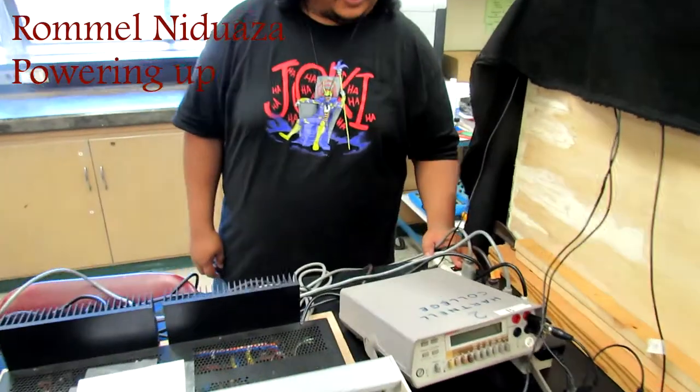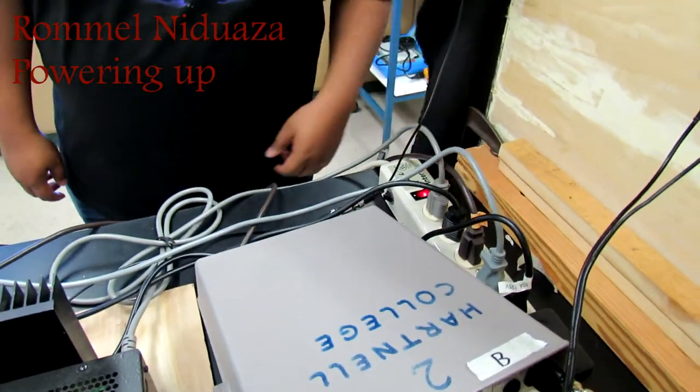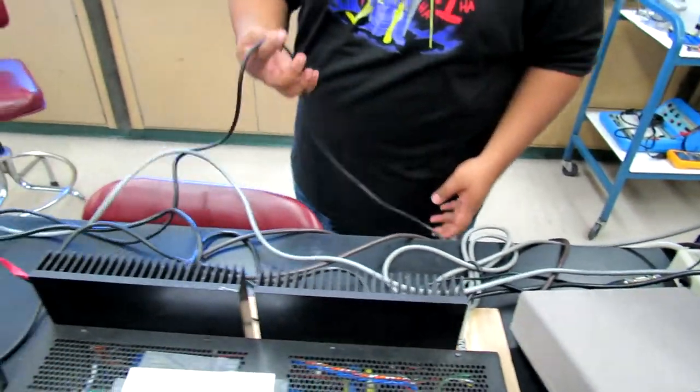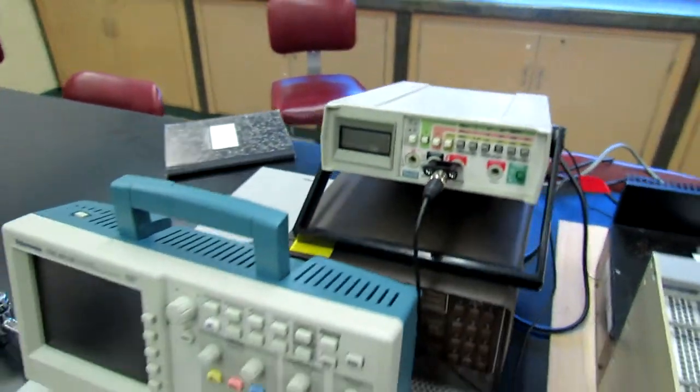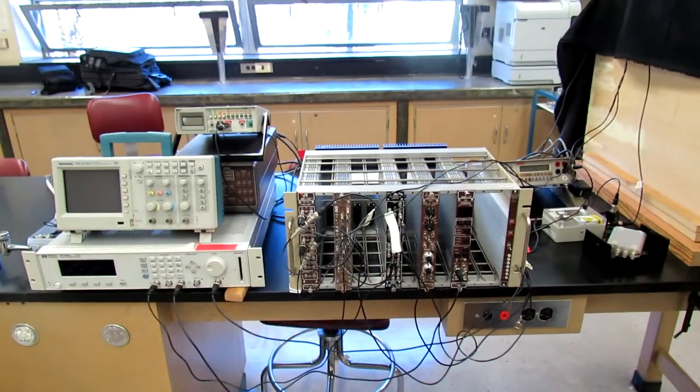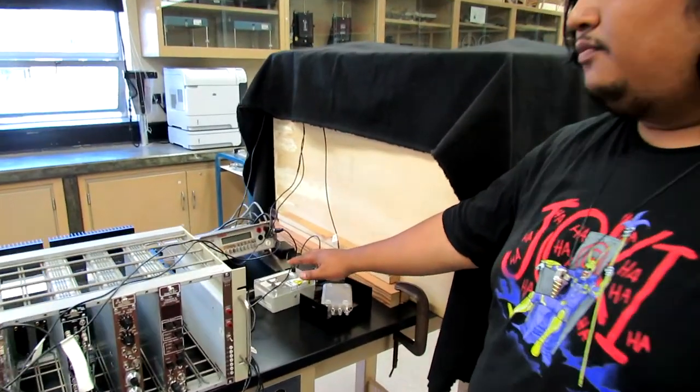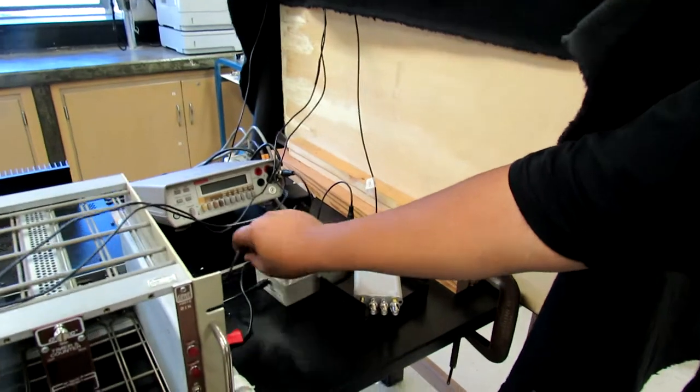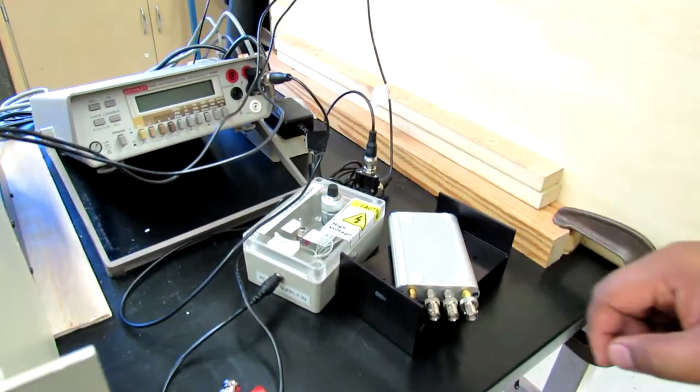So first thing you got to do is power everything on. Everything's attached to the surge protector, but we have some extra stuff that's going directly to the outlet. That's the pulse generator. So let's go through the equipment then. There is currently one high voltage power supply that we put together with an adjustable knob for the voltage setting.